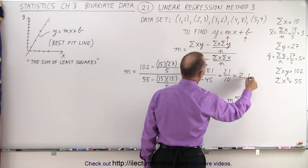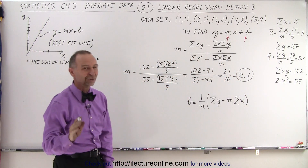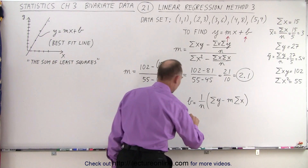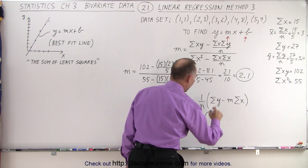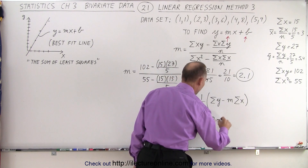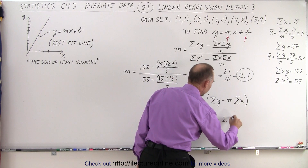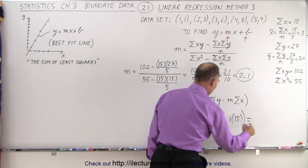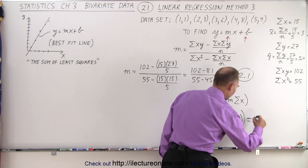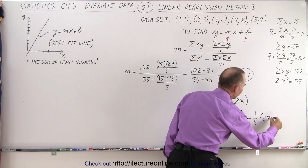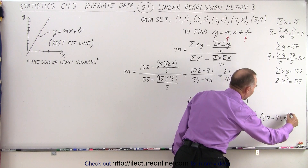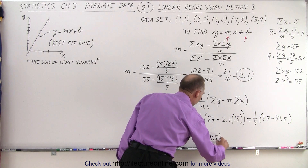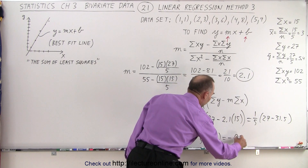We recognize that 2.1 is the correct value for the slope. We plug that into our second equation for b. So b is equal to 1 over 5 times the sum of all the y's, which is 27, minus 2.1 times the sum of all the x's, which is 15. That will then be equal to 1 over 5 times 27 minus 31.5. So b is equal to one-fifth times negative 4.5, which is equal to negative 0.9.